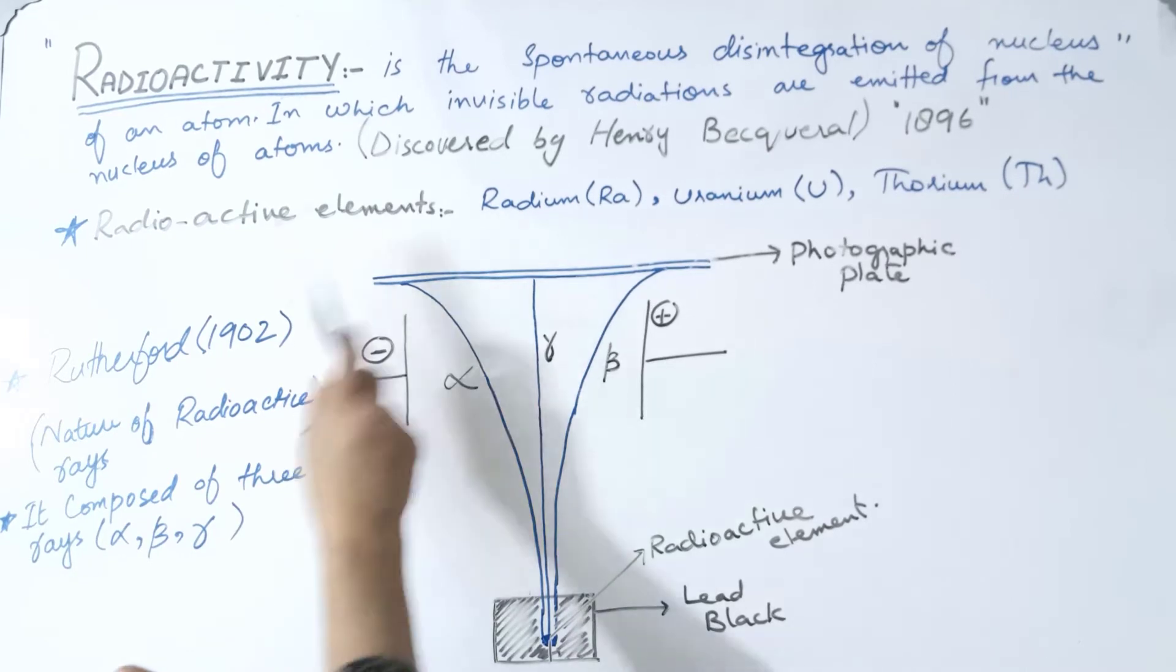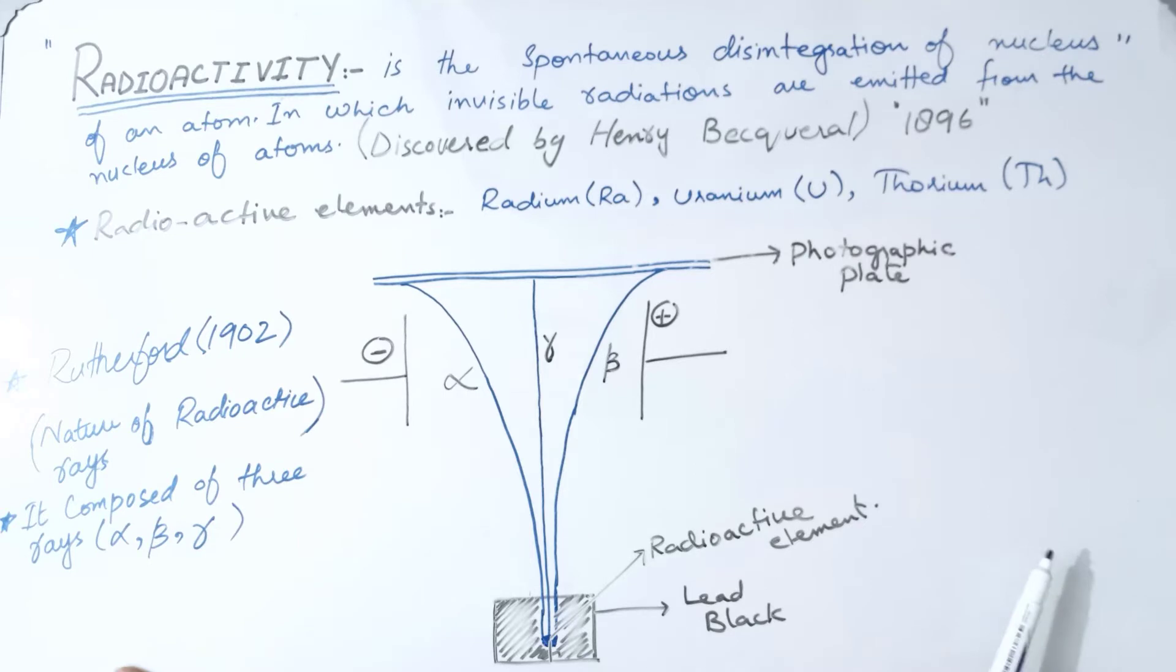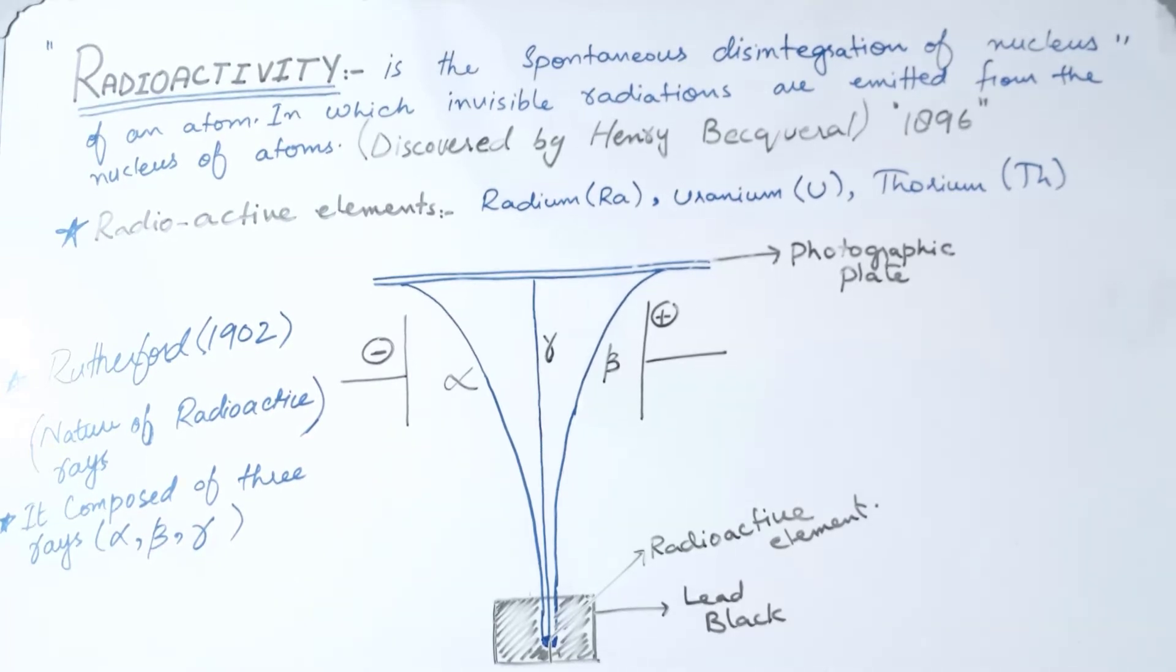What is radioactivity? Radioactivity is the spontaneous disintegration of the nucleus of an atom, in which invisible radiations are emitted from the nucleus of atoms. The atom releases this energy to stabilize itself in the form of radiation: alpha, beta, and gamma rays.